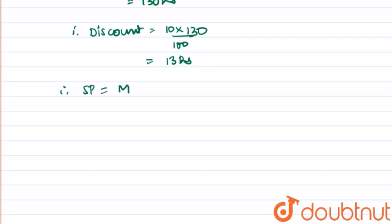So now we can calculate the selling price equal to marked price minus the discount, equal to 130 minus 13, equal to 117 rupees.